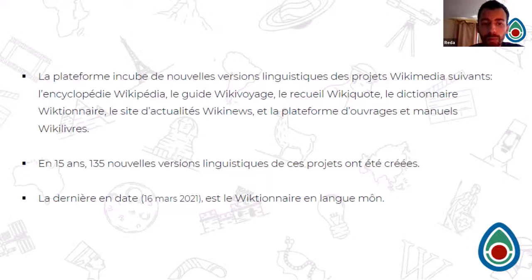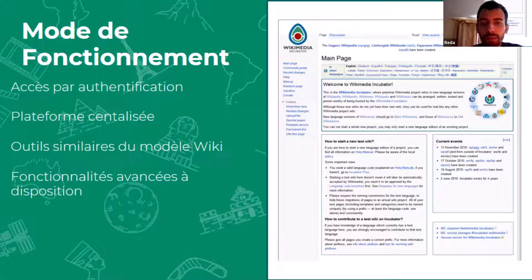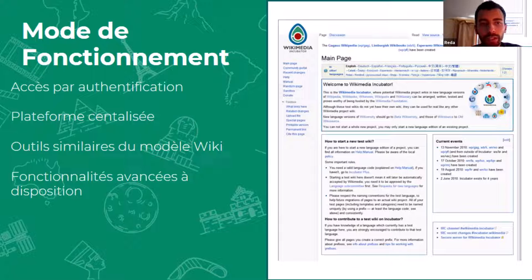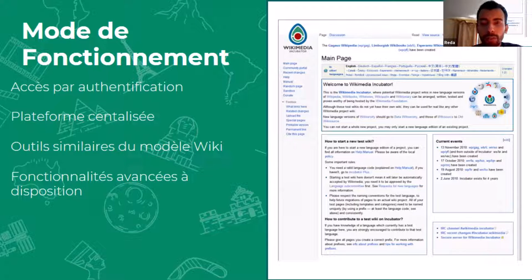The incubator is the phase to go through to achieve the objective of documenting a dictionary. As for functionality, access is by logging in — you can log in to track your contributions. Editing with your IP address is possible but contributions can be lost easily and cannot be tracked, so the best way is to have an account and log in to ensure your contributions are well documented.